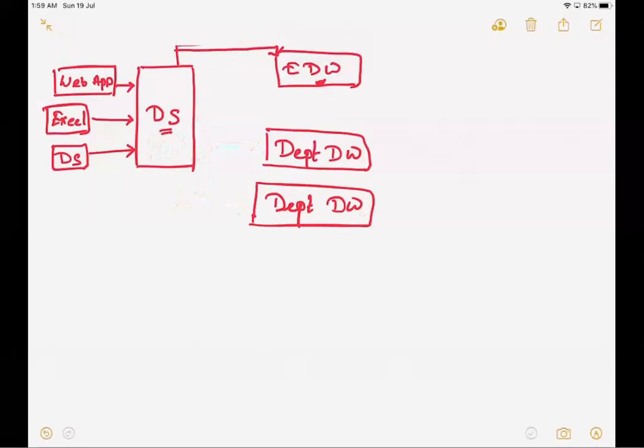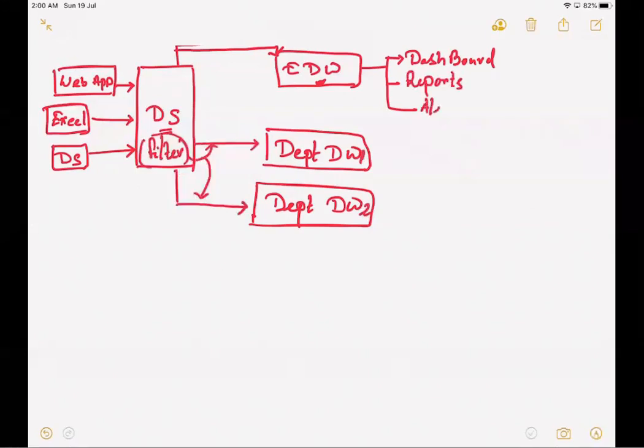In the enterprise data warehouse, there will be three components which will be connected to that. The first component is the dashboard, the second component are the reports, and the final component are some mechanism where you can generate alerts.